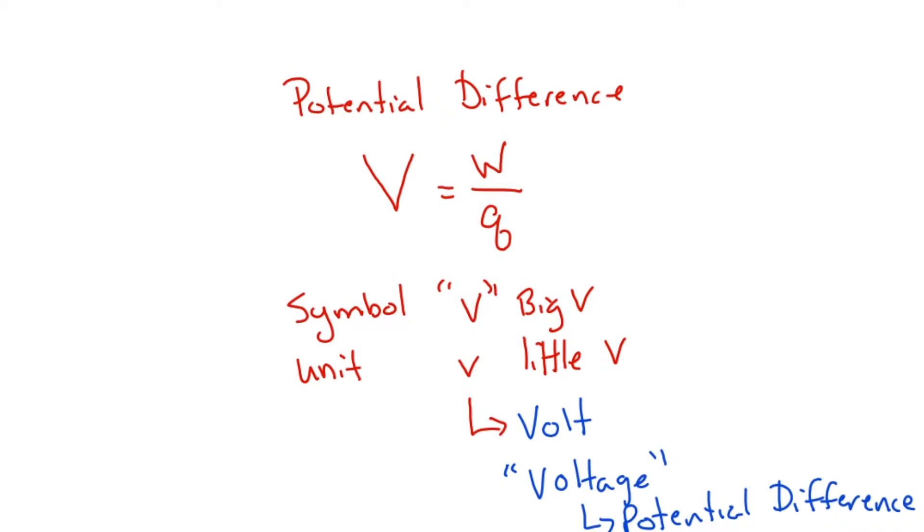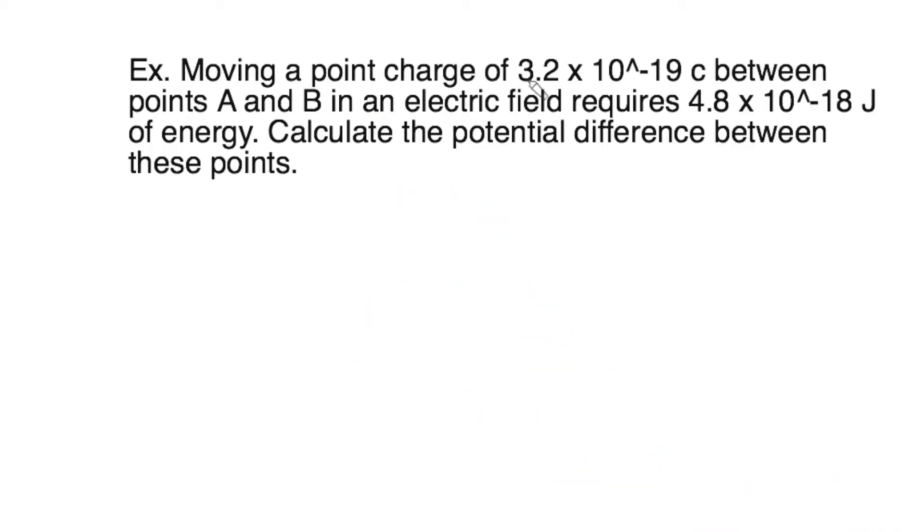So let's look at an example of this and how we'd use it. Moving an electron with a charge of this between points A and B in an electric field requires this amount of energy. Now, remember, don't forget, delta energy is work. So this right here, they really gave you work. So if we look at our givens, we have a Q, which is 3.2 times 10 to the minus 19th Coulomb.